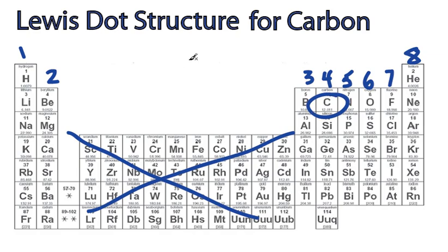So all we have to do now is draw our carbon right here, and let's put some valence electrons around it. So we start out, we put 2 right here, this pair on this side,